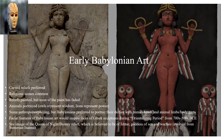Religious scenes are common in Babylonian reliefs. The reliefs would have originally been painted, but most of the paint has faded since these reliefs were outdoors. These reliefs display some combination of animal and human features on their subjects, but the Babylonians preferred to portray their deities with human heads, animal limbs, and body parts, unlike the Egyptians who preferred to show their gods and goddesses with animal heads but human bodies.